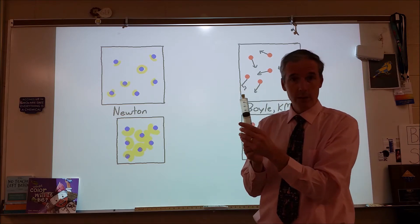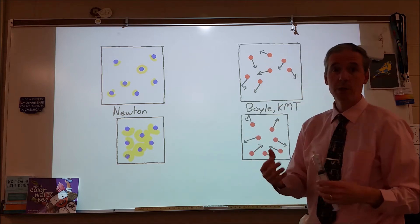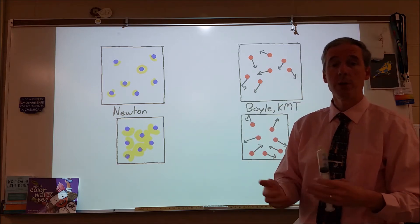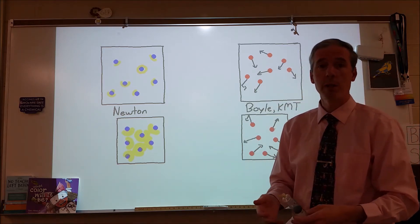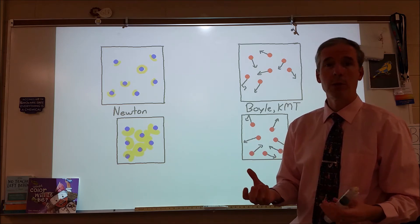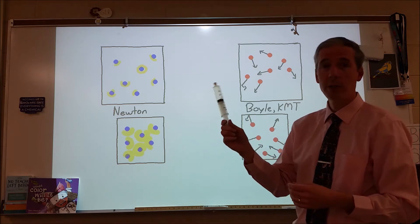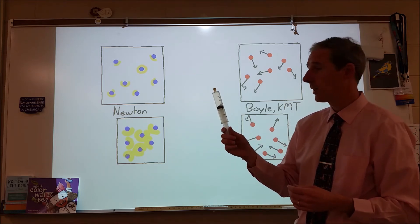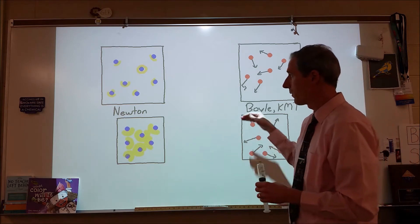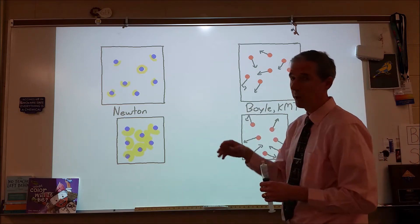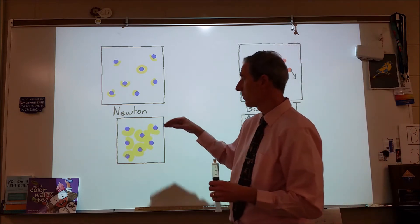Back in the 1600s, Robert Boyle's experimentation showed that there was a relationship of an inverse proportionality between the volume and pressure of a gas. Now Robert Boyle didn't have plastic at that time, he didn't have a number of other things, but he managed to find this relationship and there were two competing explanations for it.